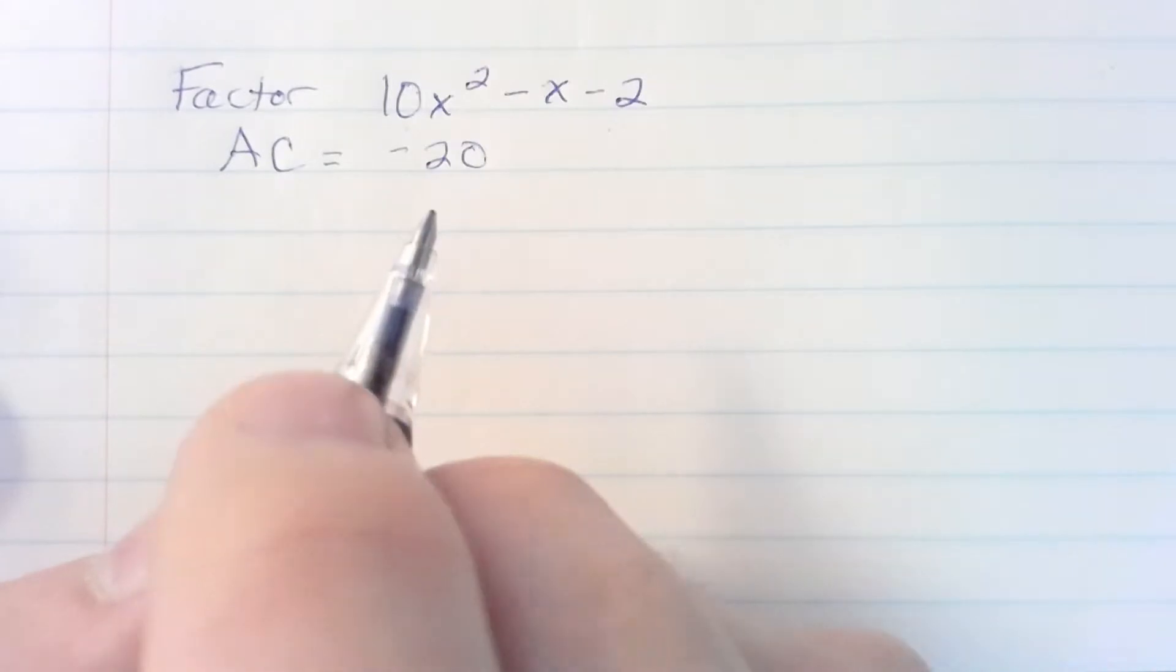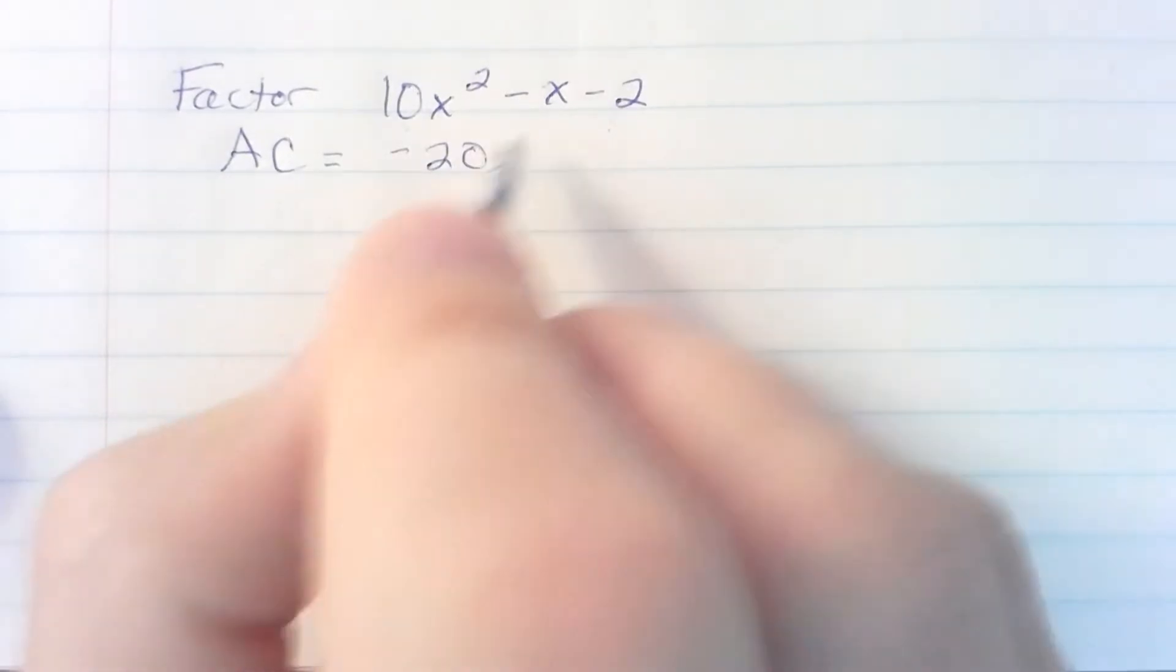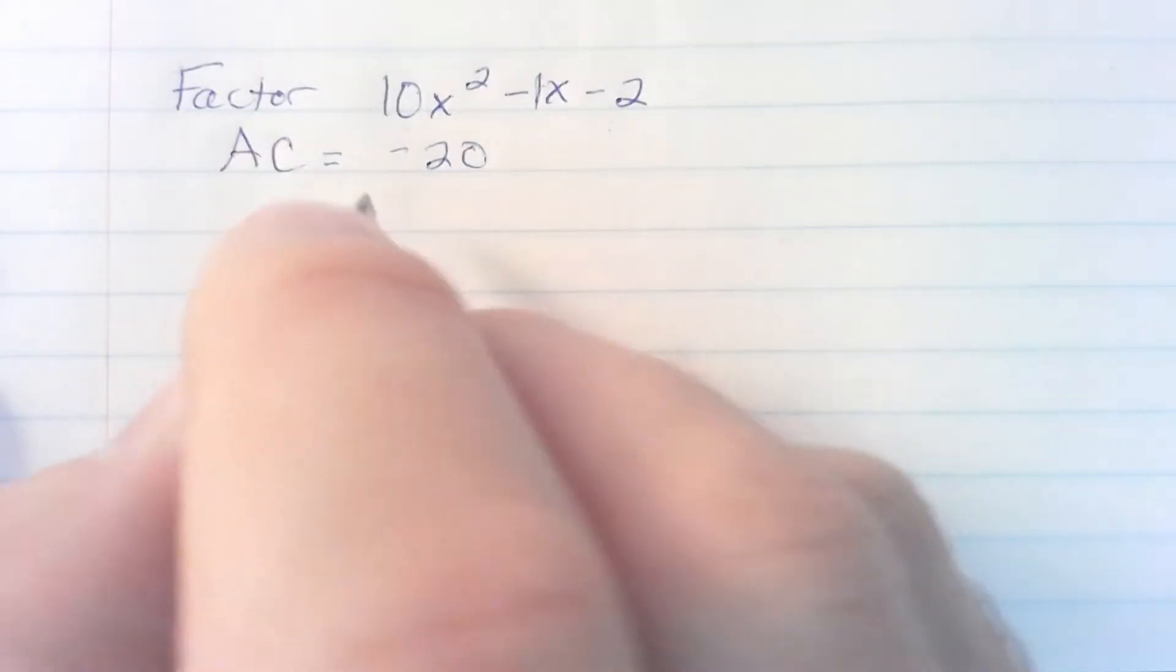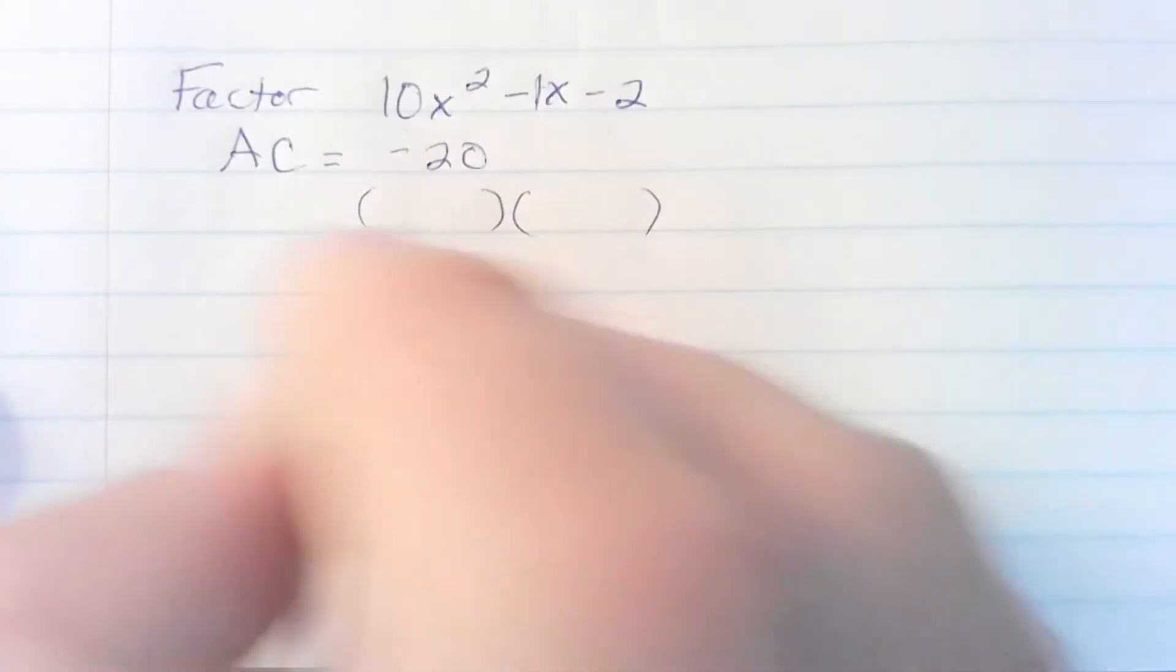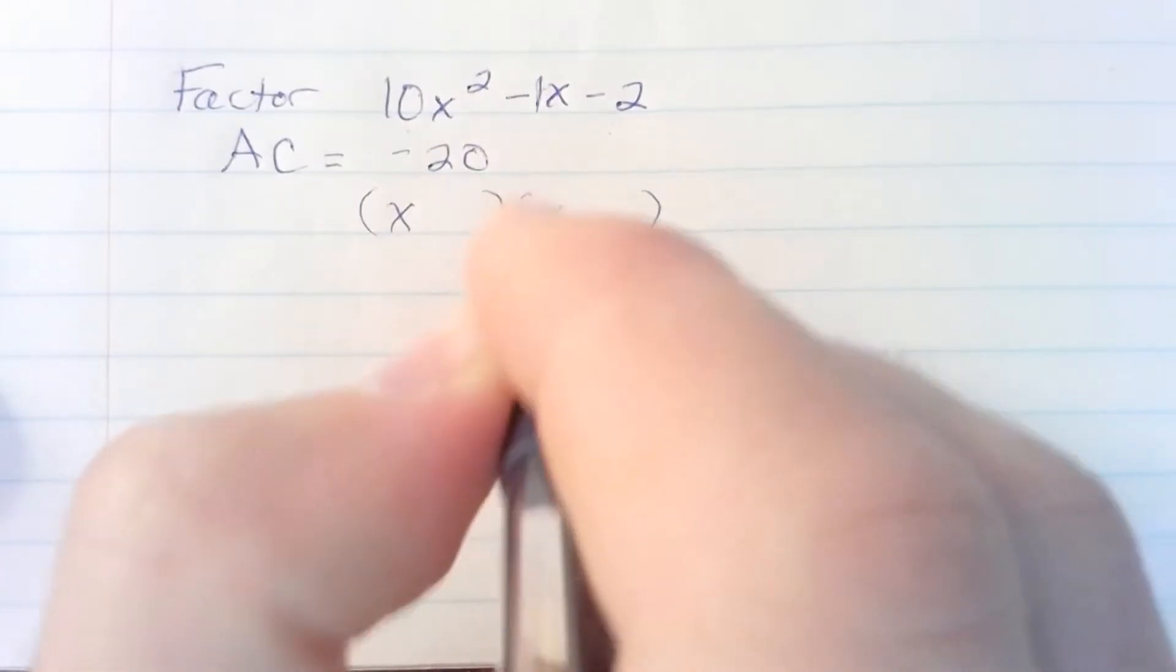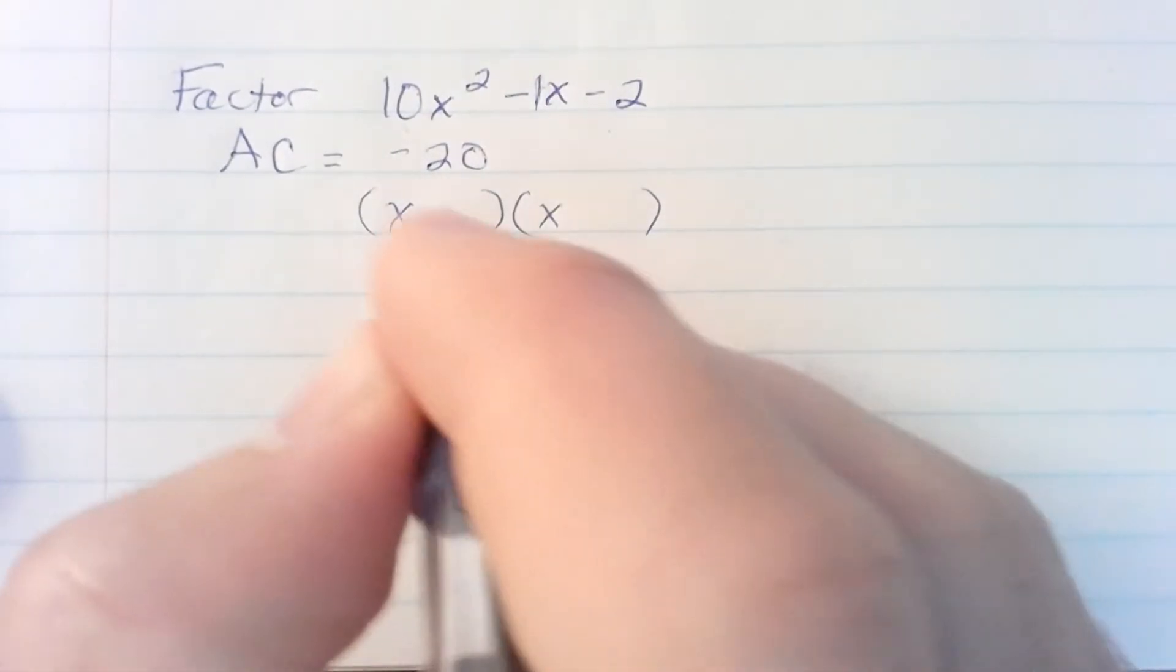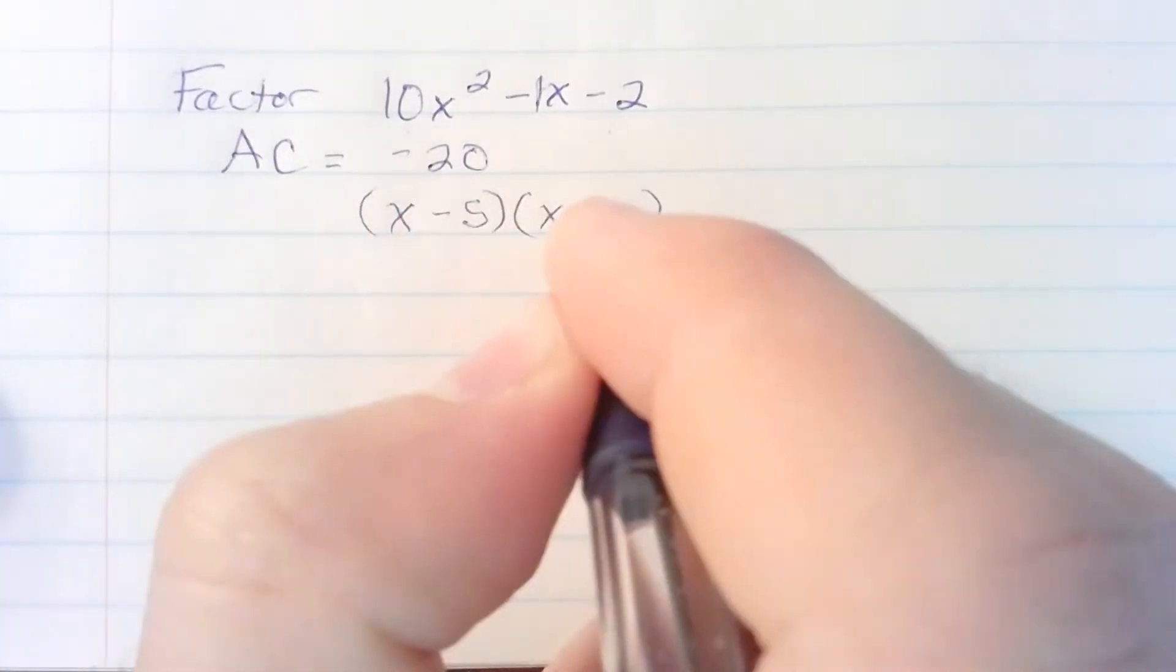That is the number we ask ourselves what factors of negative 20 add up to the negative 1 which is the B term. So it's similar to the normal way of factoring. I'll first set up my work with x and x and the numbers I'm after are negative 5 and positive 4.